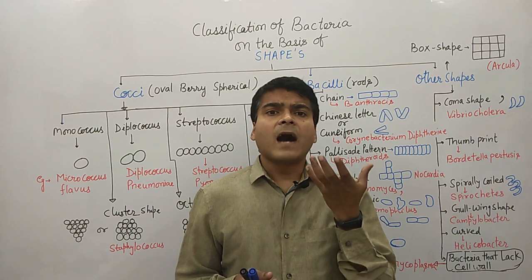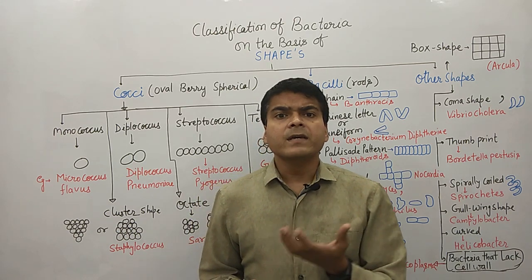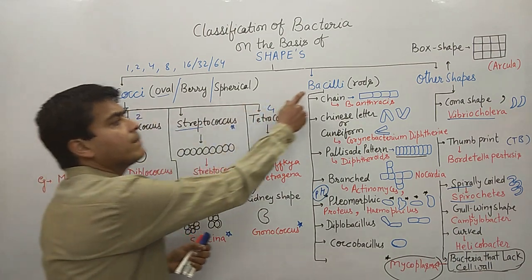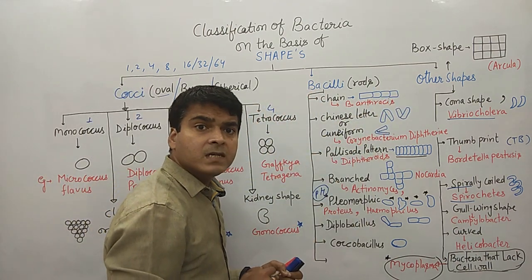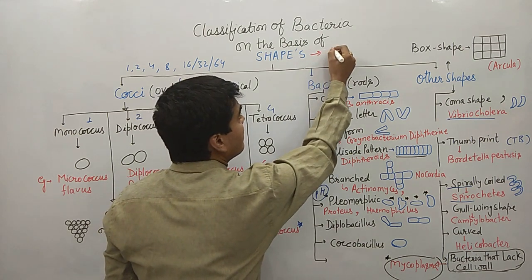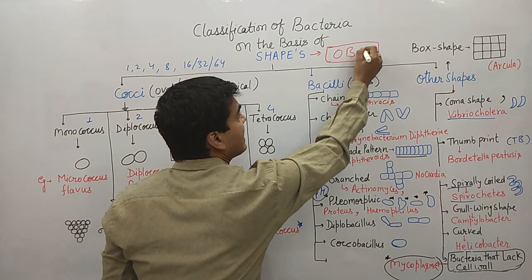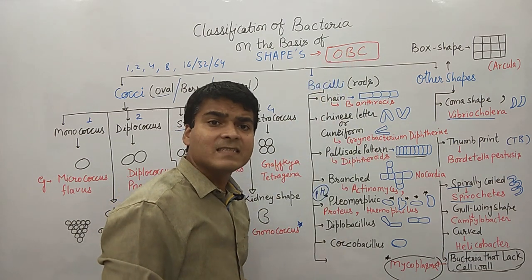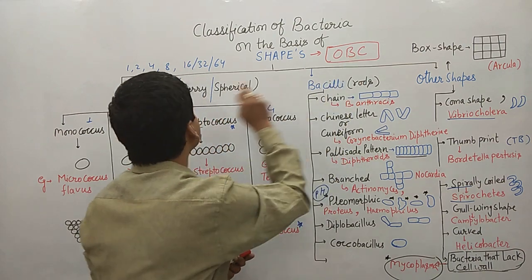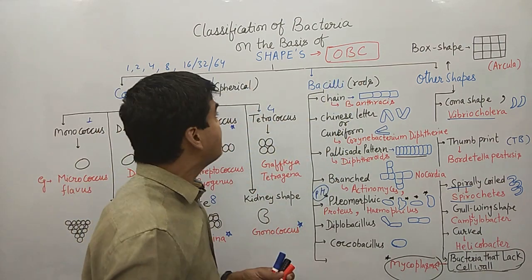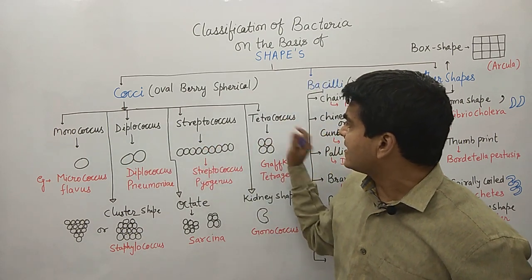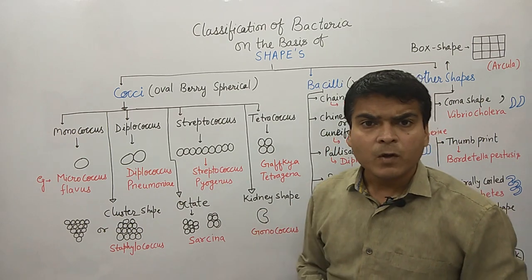Now I'm going to discuss how to classify bacteria on the basis of shape. We are dividing bacteria into three shape-based groups: cocci, bacilli, and other shapes. To remember these three terms, we use a trick — OBC, meaning Other Backward Classes. O for other shapes, B for bacilli, and C for cocci.